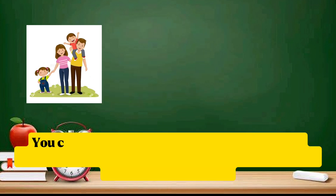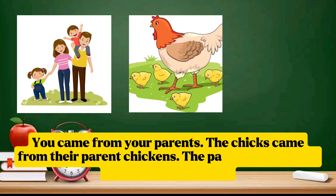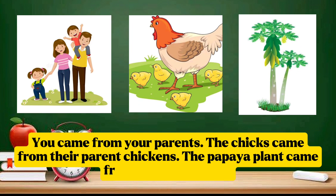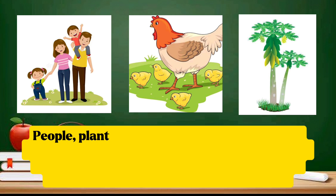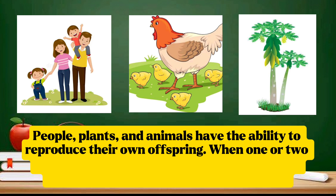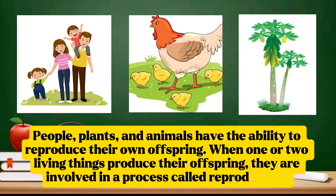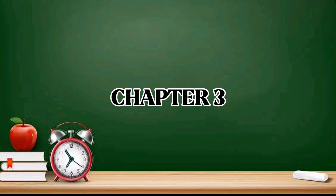You came from your parents. The chicks came from their parent chickens. The papaya plant came from its parent plant. People, plants, and animals have the ability to reproduce their own offspring. When one or two living things produce their offspring, they are involved in a process called reproduction.